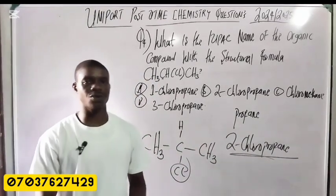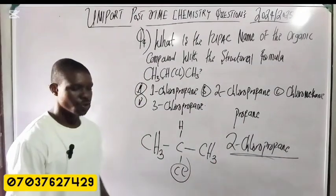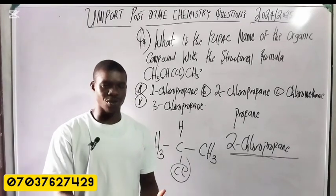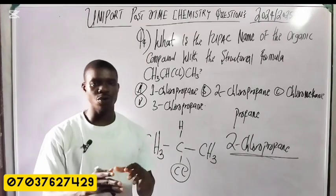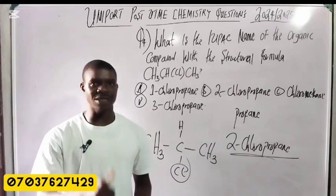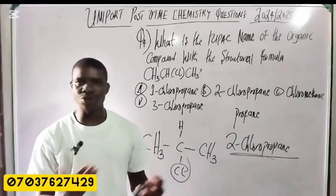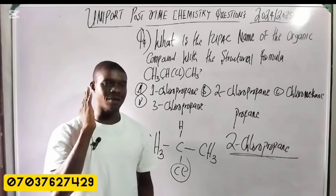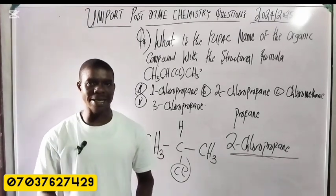How many carbons do we have? One, two, three — so the parent chain is propane. The chlorine is on carbon two, so it will be 2-chloropropane. That is the answer — 2-chloropropane. It's as easy as that. This shows you need to understand IUPAC naming of organic compounds. For more questions like this, videos will keep coming. If this was helpful, please give it a like, subscribe, comment, and share with your friends. Thanks for watching.